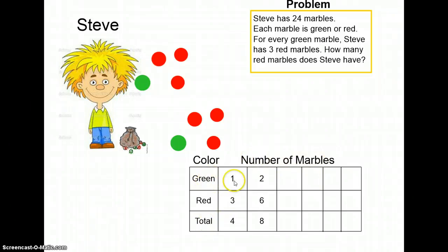We see here that if we have one green marble, we have three red marbles, and that creates a total of four marbles. If we have two green marbles, then we have six red marbles. That creates a total of eight marbles.